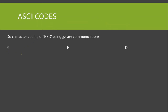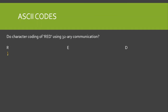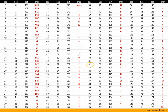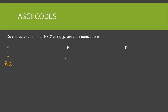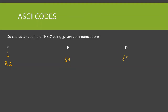Now we need to encode RED. Looking at the ASCII table, capital R has a decimal value of 82. The next letter E is equal to 69. And finally the third letter D is equal to 68. So we have R=82, E=69, D=68.